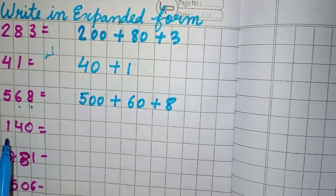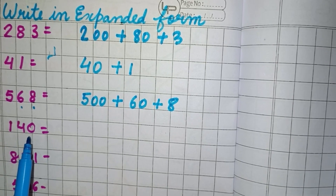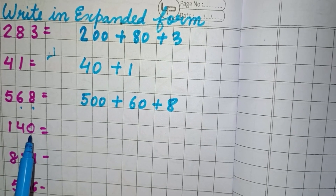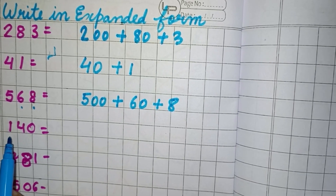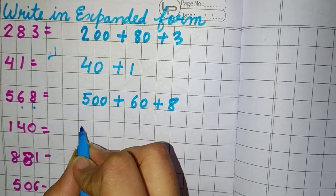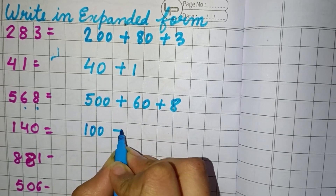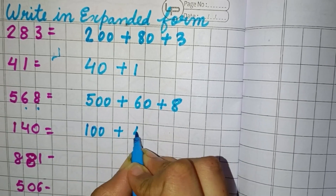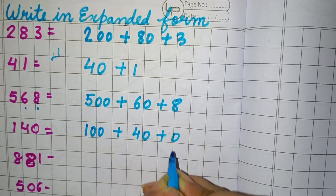Now next we have 140. So we can see 0 is in 1's place, 4 is in 10's place, and 1 is in 100's place. So we will write 100 plus 40 plus 0.